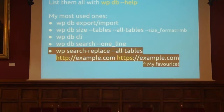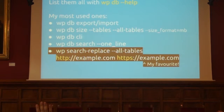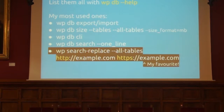WP-CLI is very convenient for database operations. You can quickly find out what your biggest tables are, and you can search any string from your database. My favorite command is WP-CLI search-and-replace. This is an example of how you can, in your entire database, change an HTTP address into the secure HTTPS version — very easily and quickly.